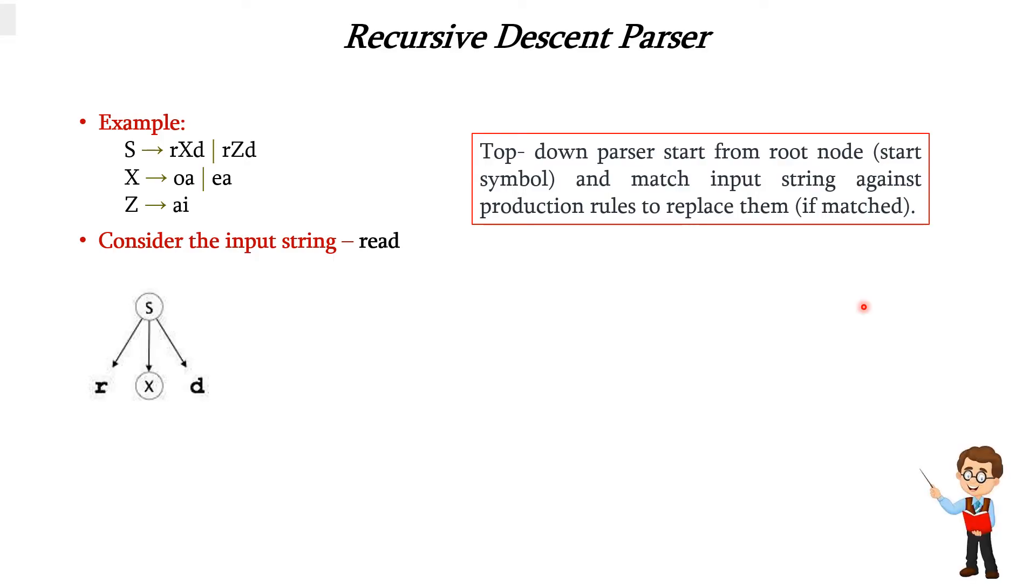We will start with the start symbol. Start symbol is always the head of the production which is lying first in the left hand side. So here S is the starting symbol. S is given here and the first rule of S is taken, that is rxd. So S is expanded with the first rule rxd.